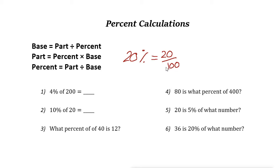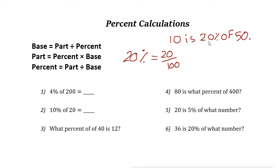In every percent problem, we're looking for three parts: the base, the part, and the percent section. For example, if you say 10 is 20% of 50 — here 10 is the part, 20% is the percent section, and 50 is the base.